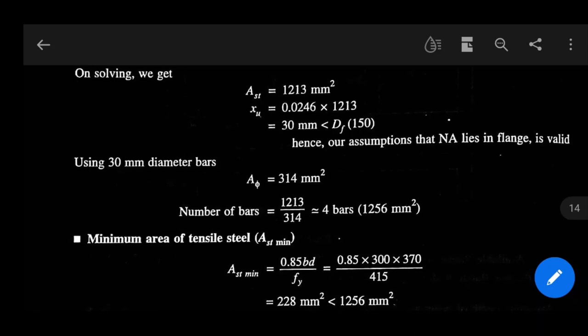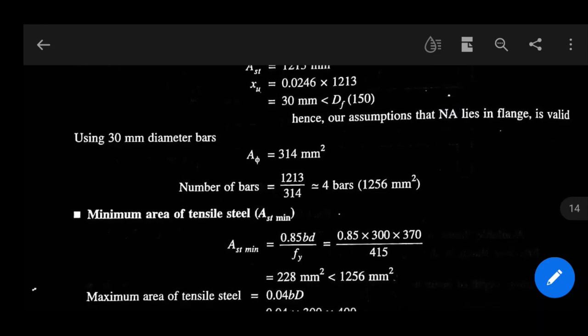Now minimum area of tensile steel, AST minimum, equals 0.85 bd by FY, which equals 0.85 into 300, that is b, into 370, that is d, by 415, that is FY. That equals 228 mm square, which is less than 1256 mm square. This is minimum area of steel required, so hence the design is safe with respect to this.